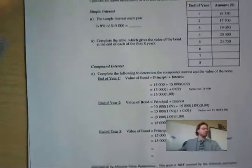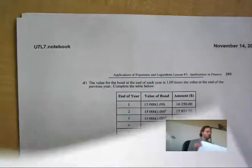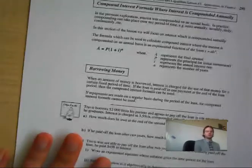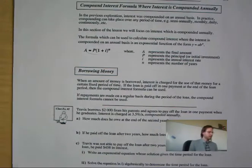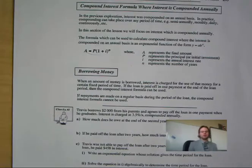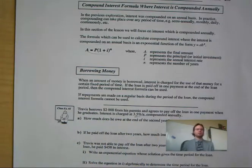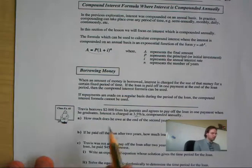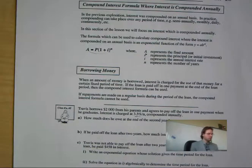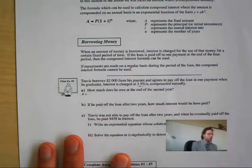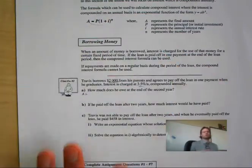Now we are going to continue. I strongly suggest going over this part, which explains compounding and how everything develops over a few years. Example number two: we are going to figure out the compounding interest formula. Travis borrows $2,000 from his parents to pay off a loan in one payment when he graduates. He is charged 3.5% annually. This one wants to know: how much does he owe at the end of the second year? We are going to put this into the formula. A is the amount he owes. My principal is $2,000.